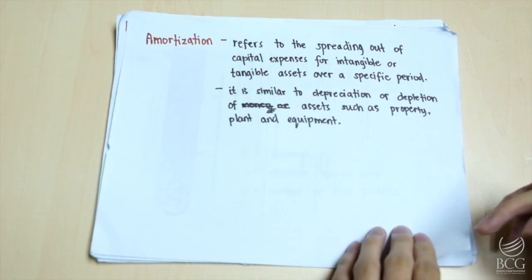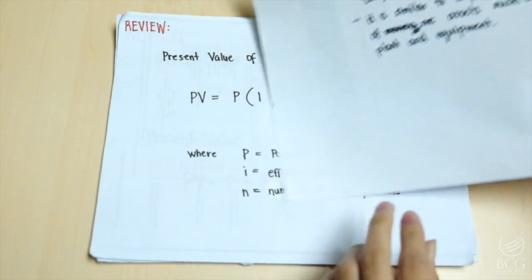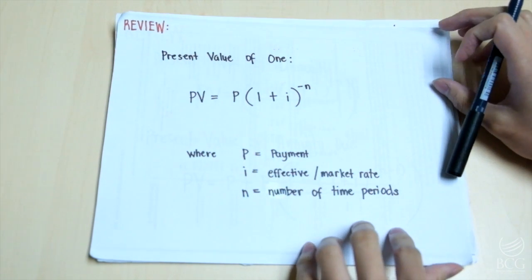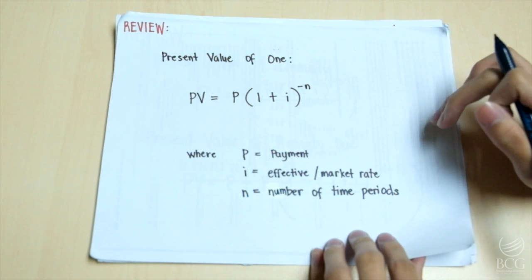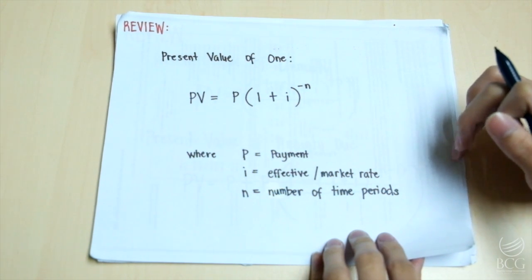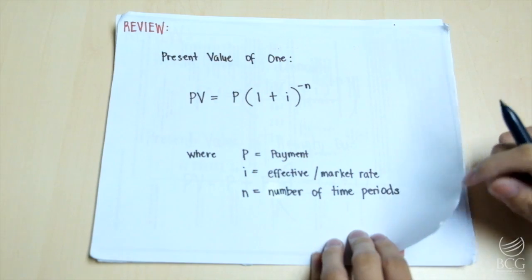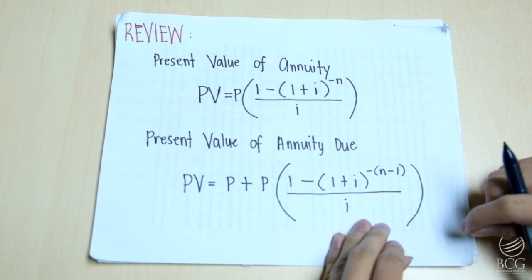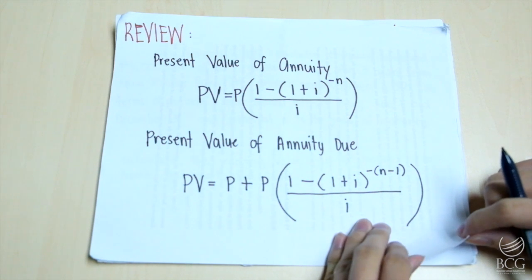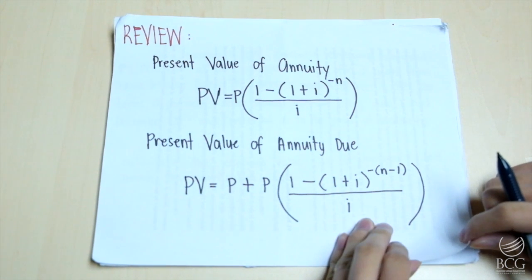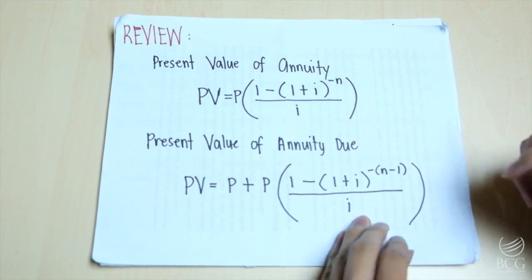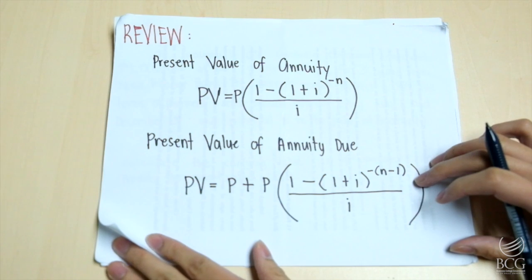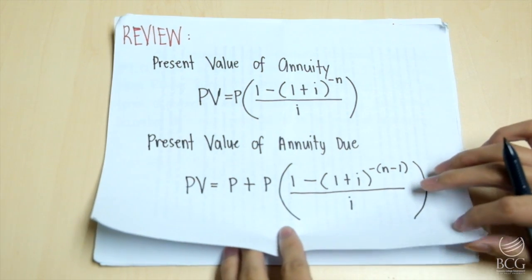Before we jump into making an amortization table, let us first recall the formula of the following: the present value of 1, wherein P is equal to payment, I is equal to effective or market rate, and N is the number of time periods. And also the present value of annuity and present value of annuity due. This will help us in determining the carrying value of the debt or instrument as we go along in this episode. With that, let us try some examples to better understand how to do amortization.